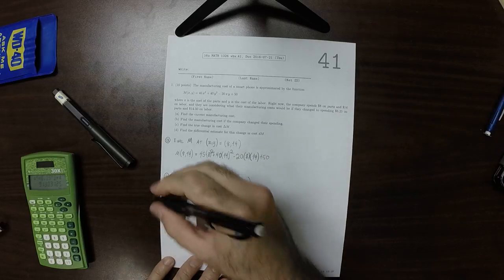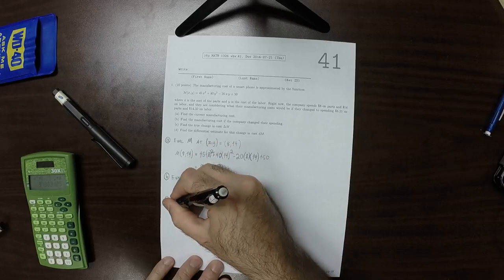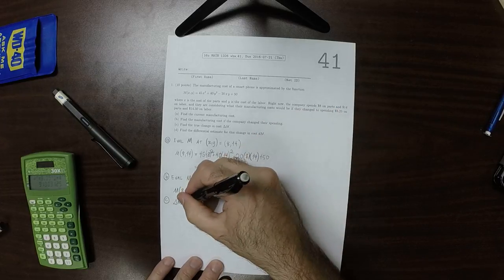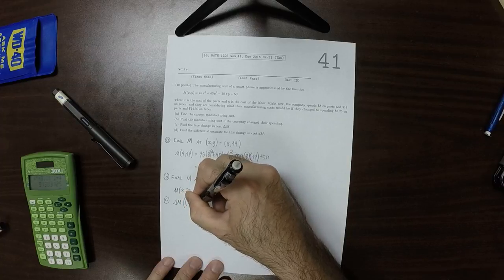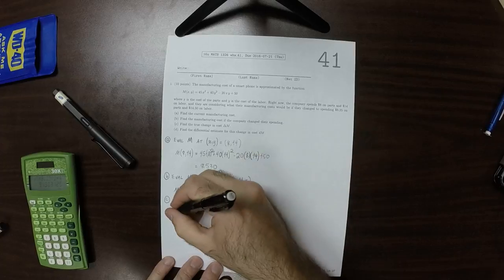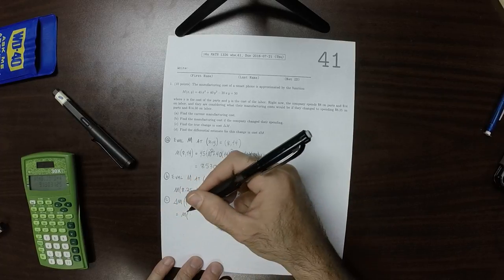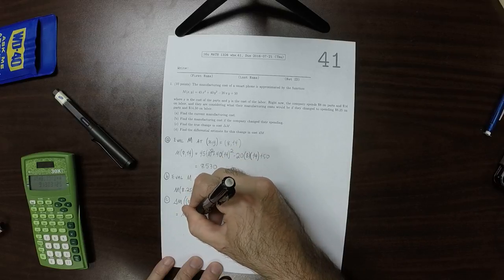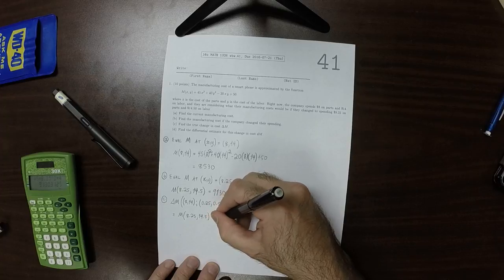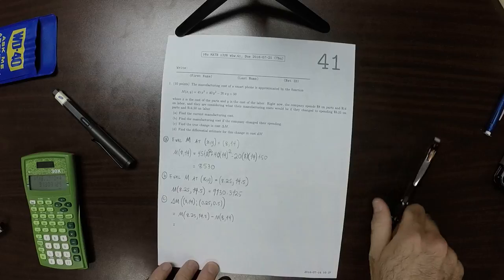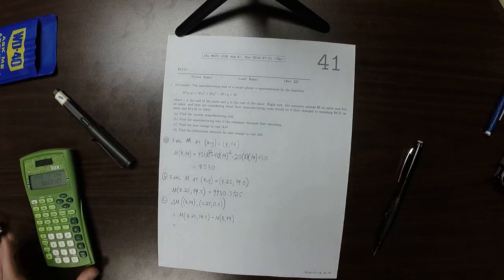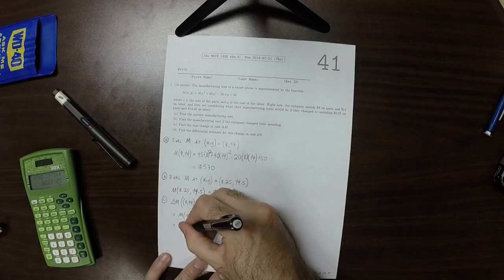Okay, so find the change in cost, delta M. So when you start at 8, 14 and you have the change 0.25, 0.5, what's being asked is the difference between the previous two answers. So this would be M evaluated at 8.25, 14.5 minus M evaluated at 8, 14, which is 600.3125.